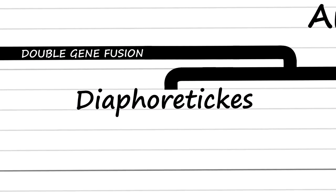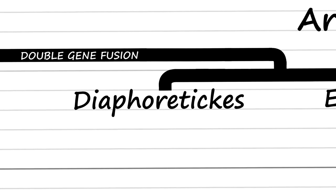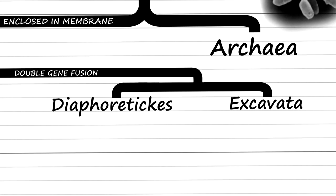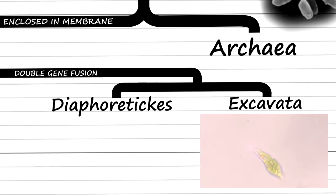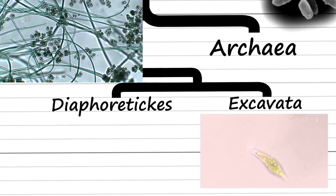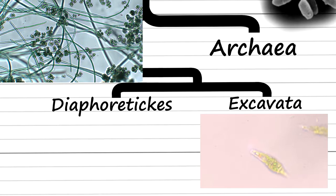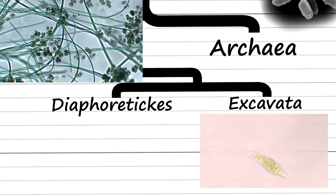The Diaphoretics is a group that includes almost all species engaging in photosynthesis, except for the Euglenozoa, which is part of Excavata, as well as the cyanobacteria, which we talked about in the last episode.